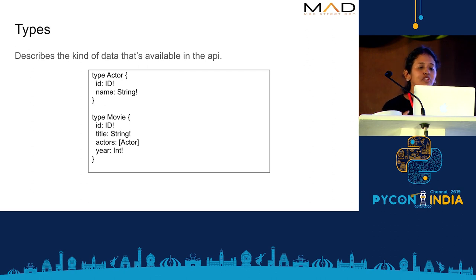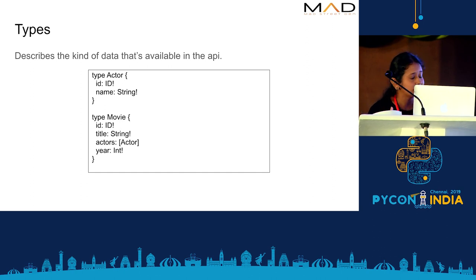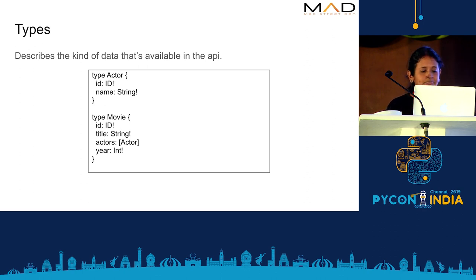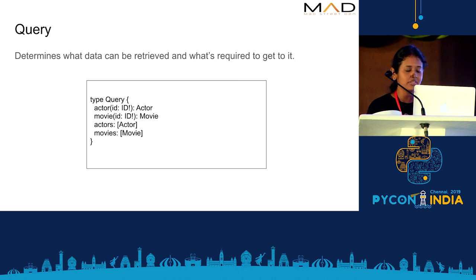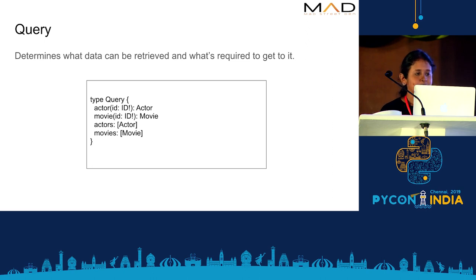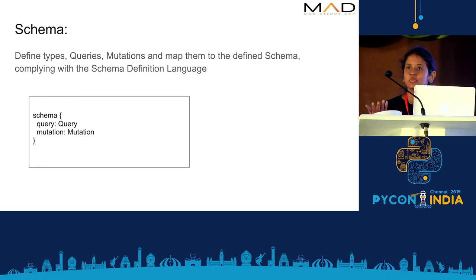Types describe the kind of data available in the API. For example, Actor is an object — different objects are defined with fields, and a field can itself be another object, which is how we define relationships between objects. This follows a schema definition language in GraphQL — a simple syntax for defining the schema. We can have queries that return a single object when an ID is specified, or a list of objects for listing all actors or movies. We then define a schema by adding all the defined queries and mutations together.